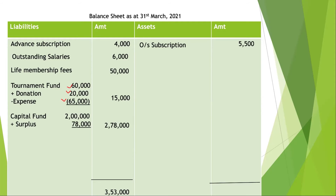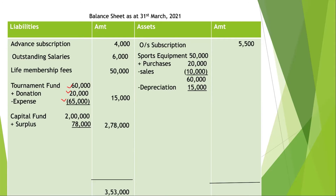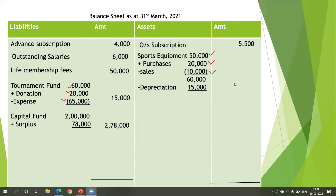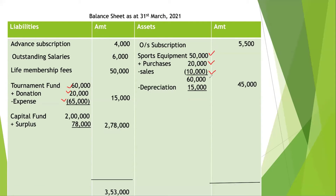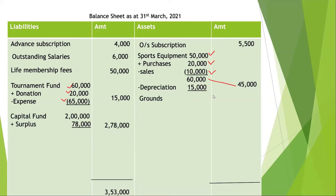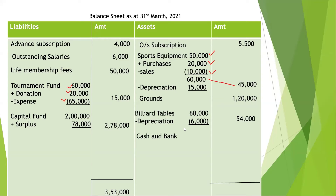On the assets side: closing outstanding subscription is rupees 5,500. Sports equipment — opening balance rupees 50,000, plus purchases of rupees 20,000, less sale of rupees 10,000, less depreciation of rupees 15,000 — closing balance is rupees 45,000. Grounds are given at rupees 1,20,000. Billiard table was rupees 60,000 with depreciation charged. Cash and bank balance is rupees 87,500. Investment is rupees 40,000 and interest accrued on investment is rupees 1,000. The total of the assets side is also rupees 3,53,000.